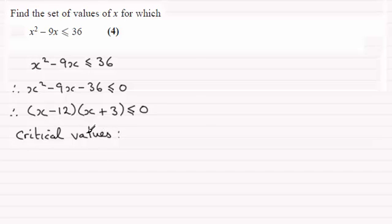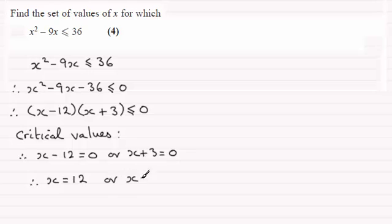So the critical values are where each of these factors equals zero. So we therefore have x minus 12 will equal zero or the other factor that's x plus 3 that's going to equal zero. And if that's the case for x minus 12 equaling zero, adding 12 to both sides gives us x equals 12. And for x plus 3 equaling zero, if we subtract 3 from both sides we end up with x equaling minus 3.